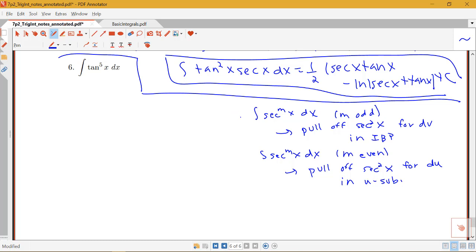So what about just a single power of tangent? Well, for a single power of tangent, whether it's even or odd, we're going to pull off a tangent squared and write it in terms of secants using the Pythagorean identity.